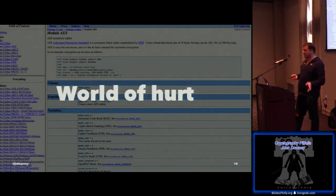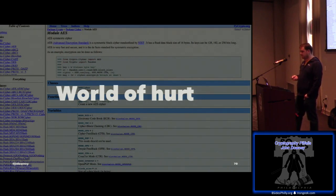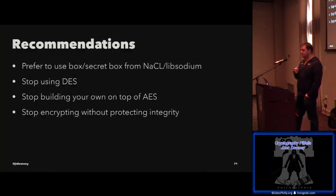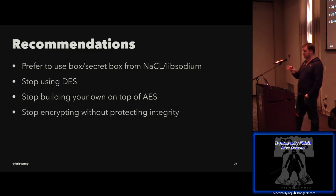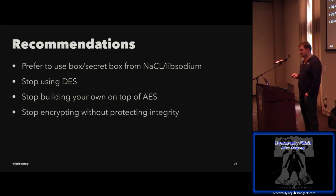Prefer the box/secret-box style algorithms from Libsodium — it's pre-done authenticated encryption, well understood, and very good. There are many systems that implement this now. Stop using DES. Stop building your own on top of AES, which is so popular. Stop encrypting without also protecting integrity — stop using unauthenticated encryption. If you work in a regulated industry and have to use AES, don't use it in ECB mode. Be sure to use authenticated encryption — GCM is the go-to right now. Verify the MAC tag first. You still may mess things up in a critical way, so depending on the system, it may be a good opportunity to hire a professional.